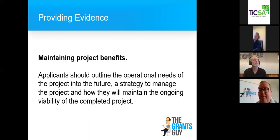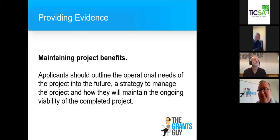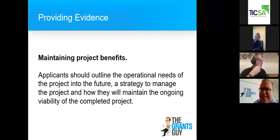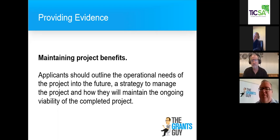Maintaining project benefits: applicants should outline the operational needs of the project into the future — a strategy to manage the project and maintain the ongoing viability of the completed project beyond the lifespan of the funding. How are you going to absorb those running costs and overheads? The last thing you want, for you or for government, is to capitulate after the funding ends. Always think about two things with grants: innovation and sustainability — how you're innovative in what you're bringing to market, and how you're sustainable beyond the grant funding round.